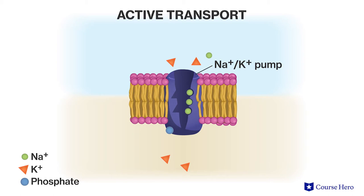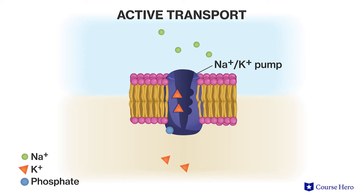The pump now has a high affinity for potassium ions, so two potassium ions will bind. This binding changes the shape of the protein again and triggers the removal of the phosphate group that is attached to the pump. The pump has changed back to its original form and opens toward the cell's interior. The pump no longer has a strong affinity for the potassium ions, causing the two attached potassium ions to dislodge from the pump. The cycle now starts again.